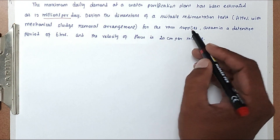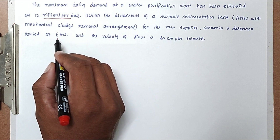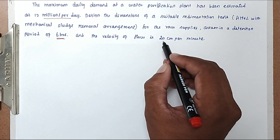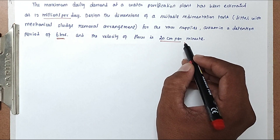For the raw supplies, assume the detention period is 6 hours, and the velocity of flow is 20 cm per minute.